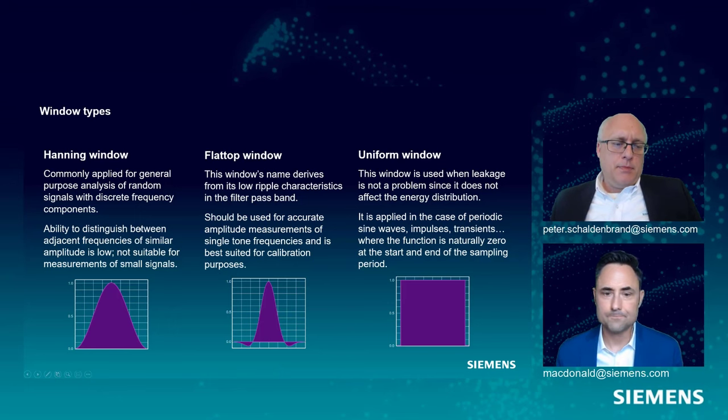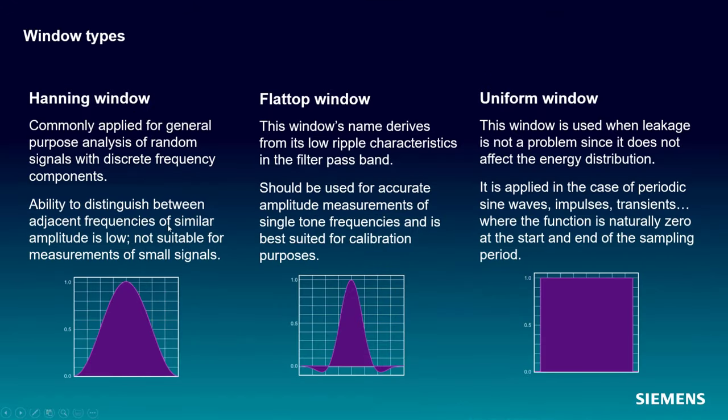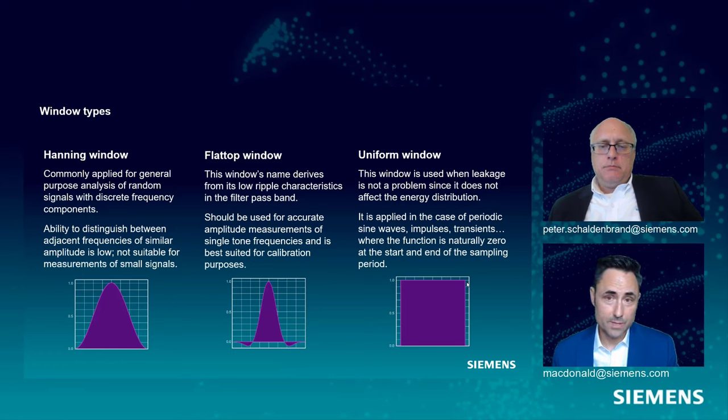This guy is called a Hanning window, nice bell-shaped curve, sort of a generic purpose window. There's also one called the flat top, which is really good at maintaining amplitude accuracy, and so it's often used for calibration. Then there's something called the uniform window, which is essentially a value of one for the whole observation time, so you're applying a uniform window if you don't apply a window. The effect is exactly the same, and so you'd apply a uniform window when you know your signal is going to be zero at the beginning and zero at the end. Again, an impact testing sort of scenario.